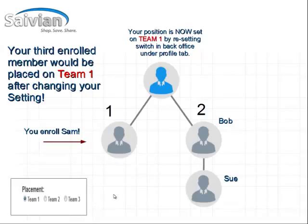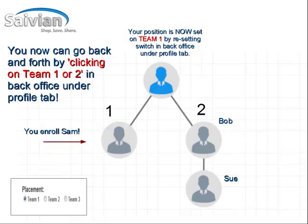This is basically how the placement settings are set up with Savion. It will default to your sponsored leg, and that's where you want to start building. After that, you'll be able to toggle in the placement area. Avoid Team 3 until you become a five-star founder — then you'll flip on Team 3 and start building your third leg at the ambassador levels. You can go back and forth by clicking on the toggles of Team 1 and Team 2 to place your next enrolled member into your organization.